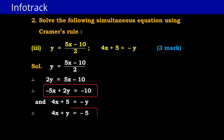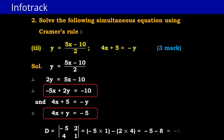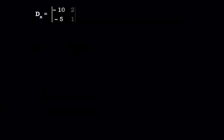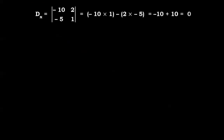From these we write D with a1=−5, b1=2, a2=4, b2=1. So D = (−5)(1) − (2)(4) = −5 − 8 = −13. Then Dx with c1=−10, b1=2, c2=−5, b2=1. So Dx = (−10)(1) − (2)(−5) = −10 + 10 = 0.